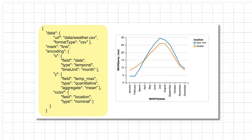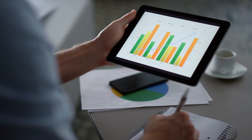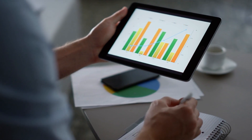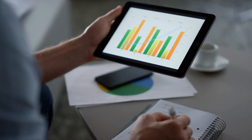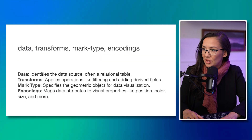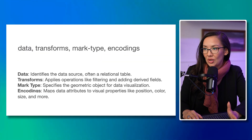The grammar of graphics breaks down visualizations into fundamental components, making complex visualizations achievable by combining simple elements. Vega-Lite streamlines these components into an intuitive syntax, enabling you to create diverse visualizations without complexity. The grammar specifications can be represented by four elements: data, transforms, mark types, and encodings.